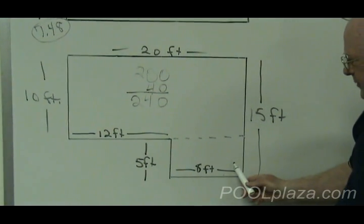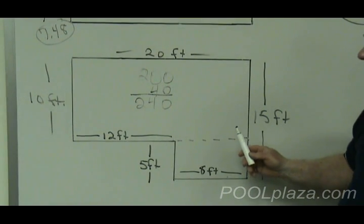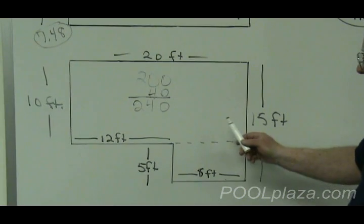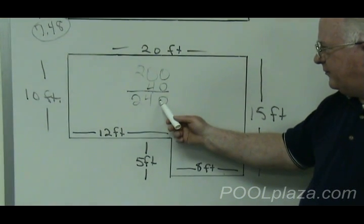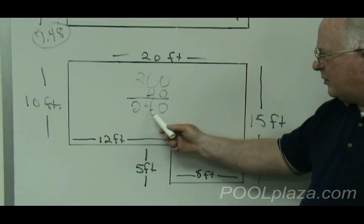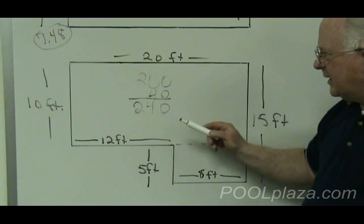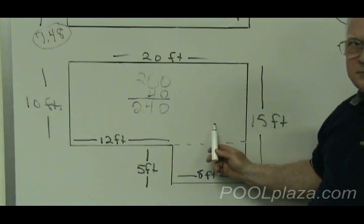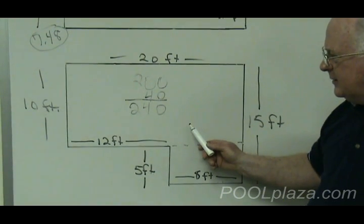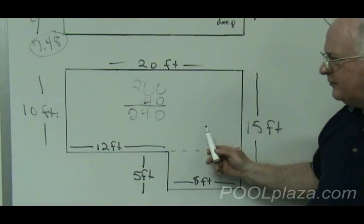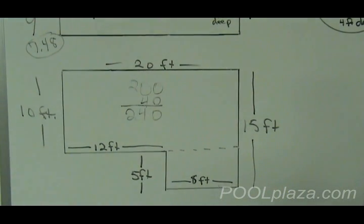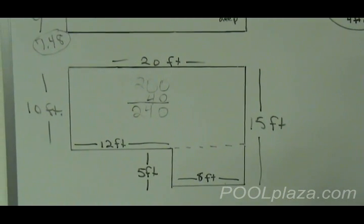Your average depth will be 4.5 feet. Multiply 240 feet by 4.5, and that gives you the cubic feet of water. And then multiply that by 7.48. And that will tell you that this pool has 8,078 gallons.